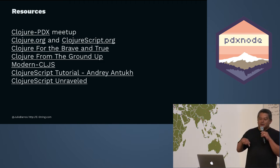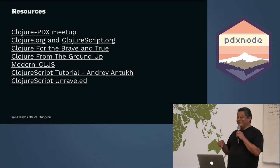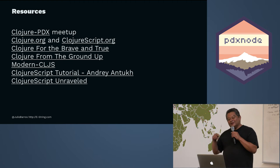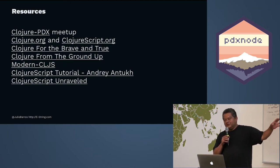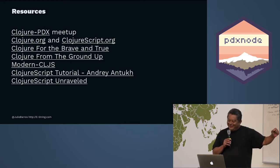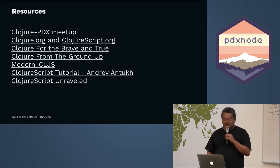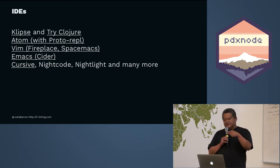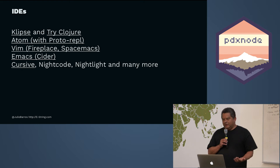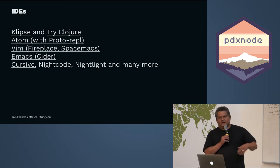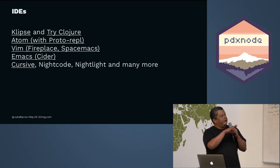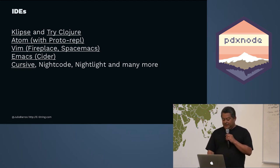Resources: I also run the Clojure PDX meetup — very friendly, come check it out. Clojure and ClojureScript each have their own websites. There's a free book called 'Clojure for the Brave and True' — it's a silly but fun book where you program to reassemble zombies. There are a couple of great tutorials for ClojureScript. IDEs include Atom, Vim, Emacs, and Cursive which runs on IntelliJ. If your favorite editor isn't listed, ask me and I'll find you something.